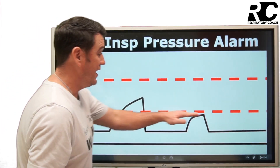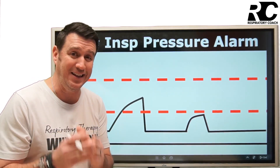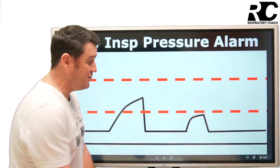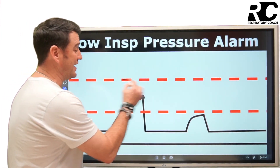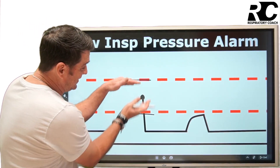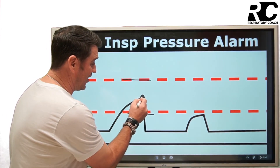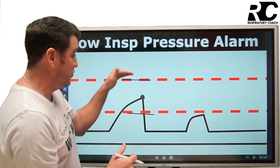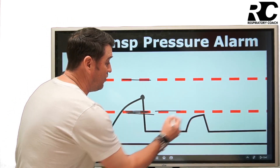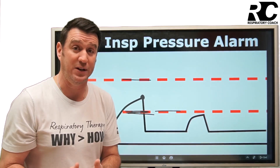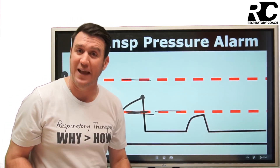We also notice another red dotted line on the waveform, which represents our low inspiratory pressure alarm. When a patient is being mechanically ventilated, your peak inspiratory pressure sits between a ceiling and a floor. We're essentially telling the ventilator: let me know if we go too high, but also let me know if the pressure fails to exceed the low inspiratory pressure alarm. Your peak inspiratory pressure should fall between your high and your low inspiratory pressure alarms.